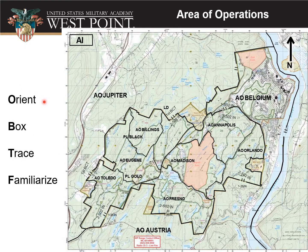When you brief your area of operations, we want you to use a four-step process: Orient, Box, Trace, and Familiarize. Orient means orient everybody to your terrain model or your map. Here is the north side of the map. To the south we have New York City, the Bear Mountain Bridge, and Bear Mountain itself. To the north there's the Newburgh Beacon Bridge and the city of Newburgh. To the west we have Woodbury Commons, and to the east we've got the Hudson River and everything on the other side of it. That would be an example.